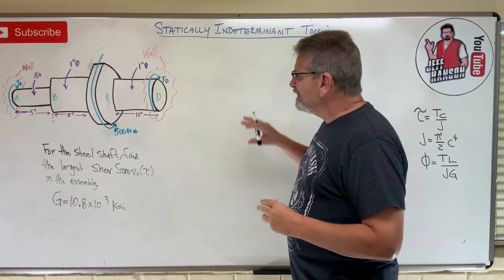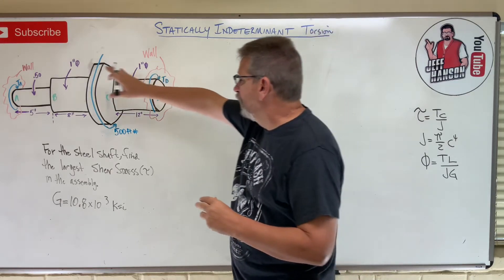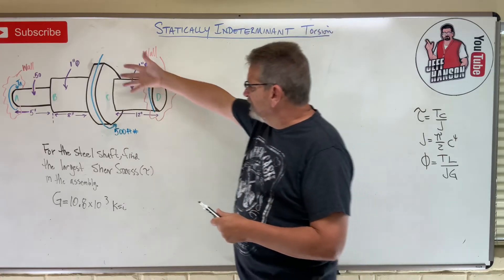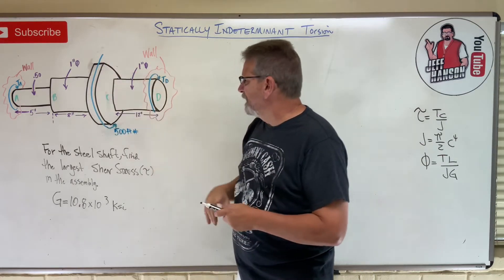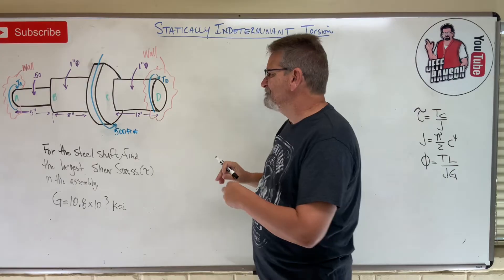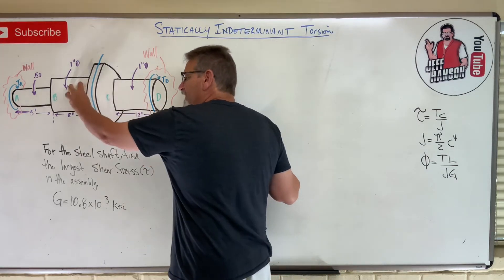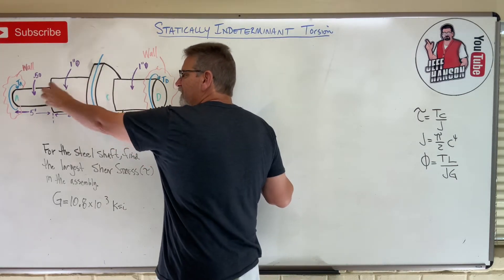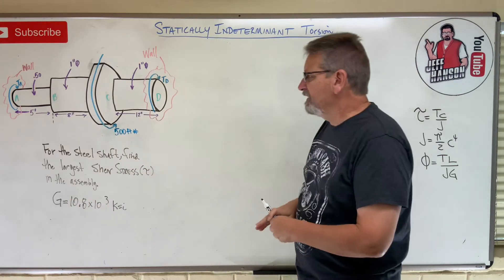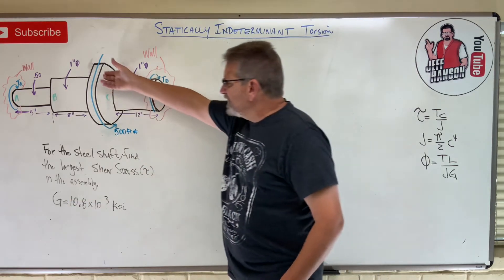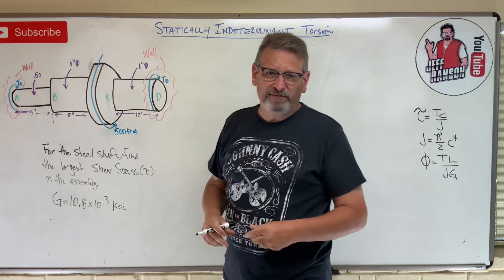So what we've got is this shaft between two walls. I've got the pink walls on the ends, and a big torque applied in the middle — 500 foot-pounds. I've got a one-inch diameter shaft here, another one-inch diameter shaft here, and a half-inch diameter shaft over there.